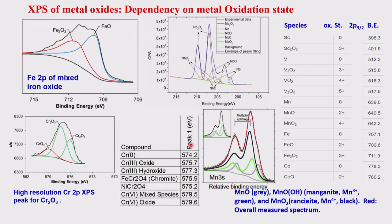The top left panel shows iron oxide iron 2P XPS spectra. FeO (Fe 2+) and Fe2O3 (Fe 3+) show increasing binding energy. Chromium also shows: CrO3 (Cr 6+), Cr2O3 (Cr 3+), etc. Cr0 is at 574 eV, Cr3+ oxide around 575 eV (+1.5 eV), and Cr6+ oxide shoots up by about 4–5 eV compared to Cr0. As the chromium oxidation state increases, the Cr 2P binding energy increases.